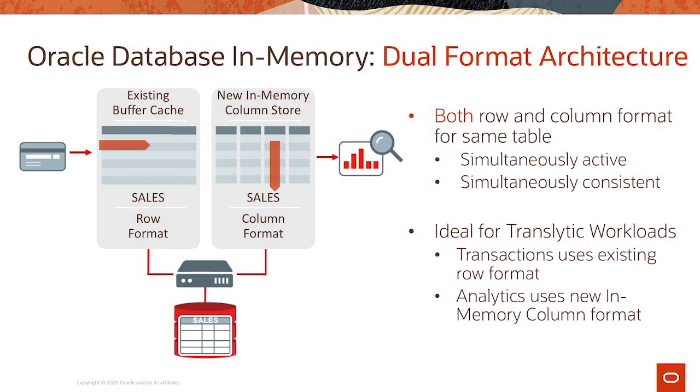This is why Oracle has adopted a converged architecture for data management. Instead of requiring a separate discrete database for each individual workload, Oracle Database uses a common storage manager with different processing algorithms for different types of workloads. Oracle Database has a dual-format in-memory architecture with a row store for transaction processing and an in-memory column store for real-time analytics, enabling efficient translytical processing. It also has algorithms for document database support, graph database support, spatial data types, and machine learning.